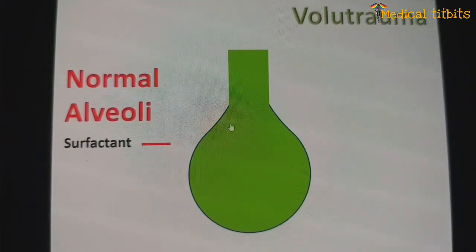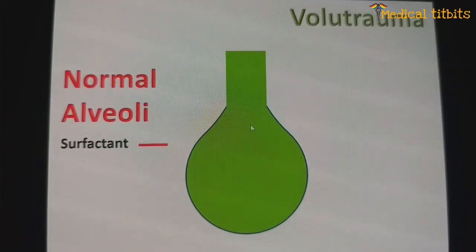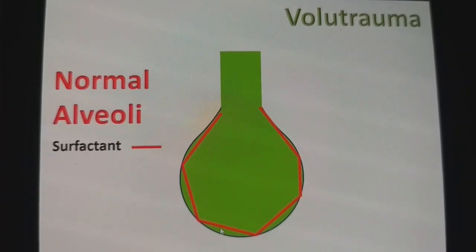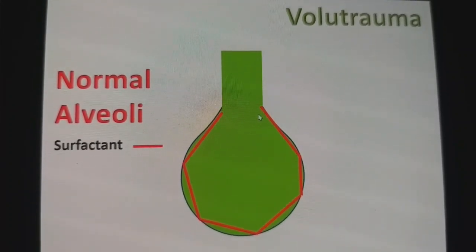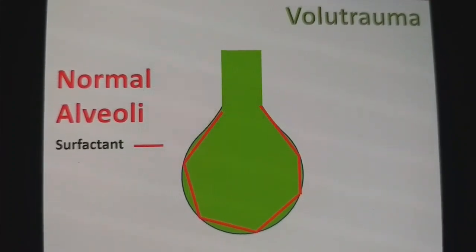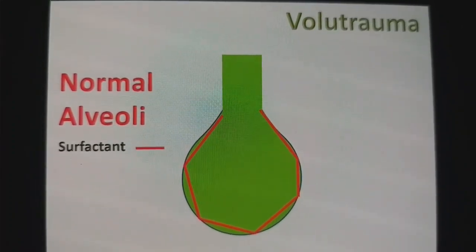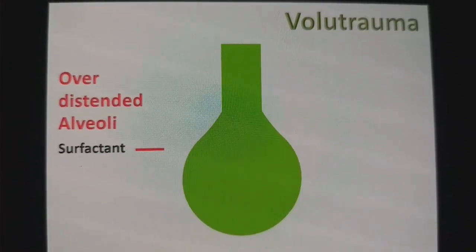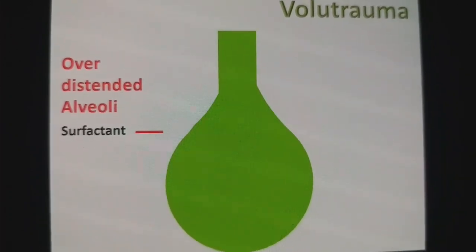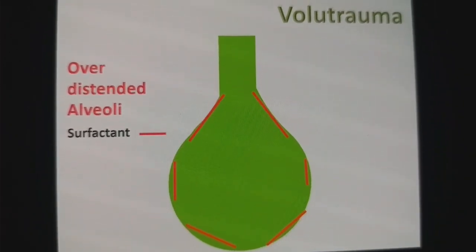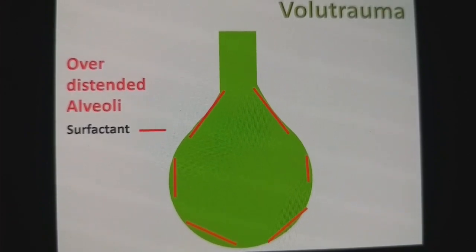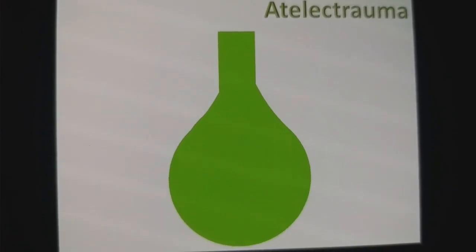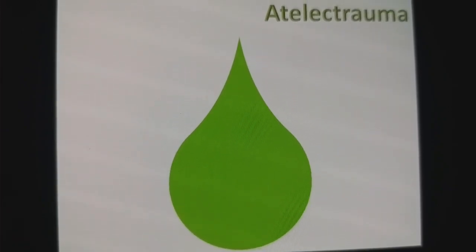What happens with ventilator-induced lung injury? Suppose this alveolus is filled with 100% oxygen, and the rare color represents the surfactant lining. When you deliver high tidal volume — unintentional delivery of high tidal volume — this alveolus gets overdistended and we disrupt the surfactant lining. So this surfactant gets lost into the airway, and gradually this alveolus collapses.